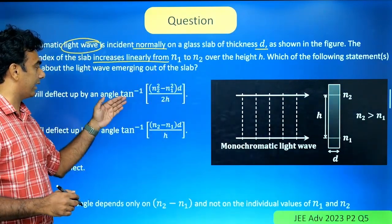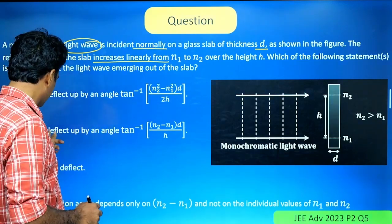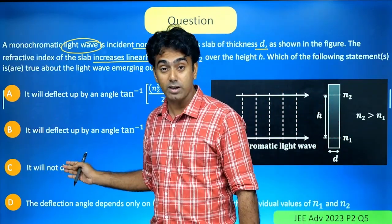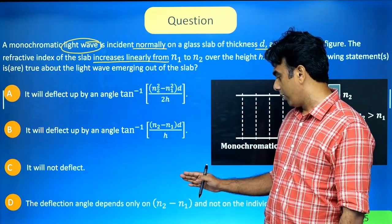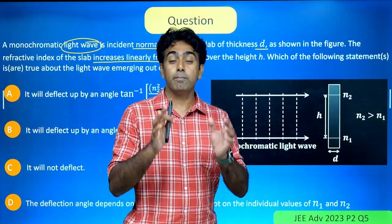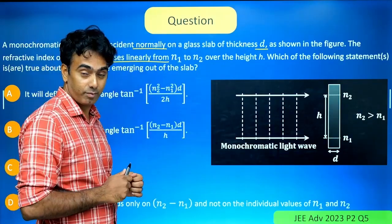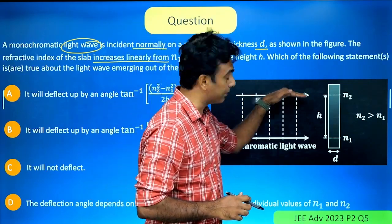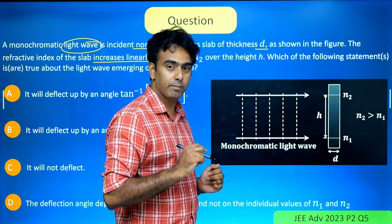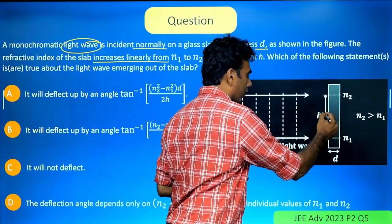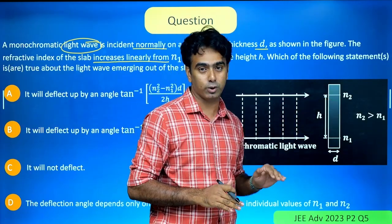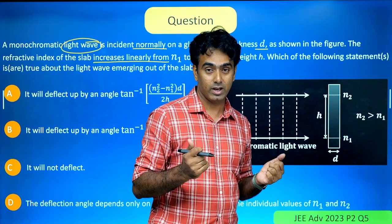The options include: it will deflect up by angle tan inverse of (n2 minus n1) times d divided by h; it will not deflect; and the deflection angle depends only on n2 minus n1 and not on the individual values of n1 and n2. Many students are confused by the 'will not deflect' option simply because light is coming perpendicularly, and along any horizontal line the refractive index remains the same — it varies only vertically, from bottom to top. So the question is: how does it bend?